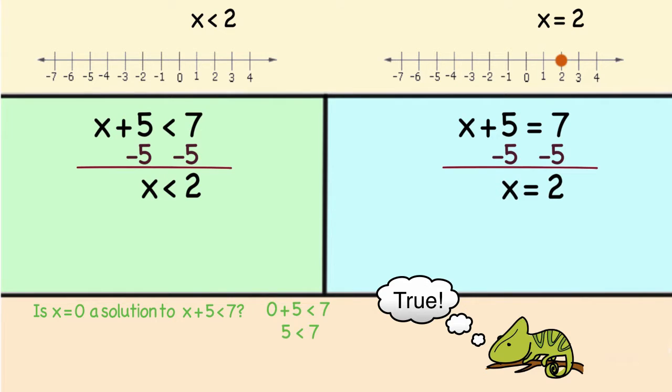So I can go to my number line here and I found one answer but we're not done yet because I need to represent all of the answers. So I have to pick all the numbers that are less than 2. So not only does 0 work.